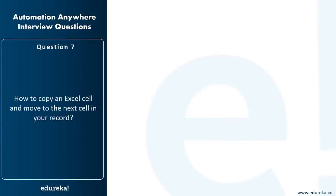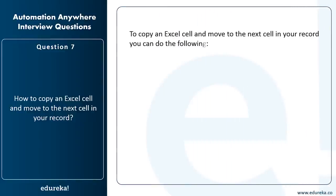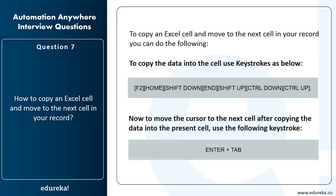How do you copy an Excel cell and move to the next cell in a record? First, copy the data into the cell using keystrokes: F2, Home, Shift+Down, Shift+Up, Ctrl+Down, Ctrl+Right. Then move the cursor to the next cell after copying the data using the keystroke Enter plus Tab.